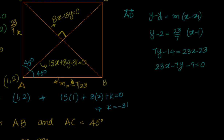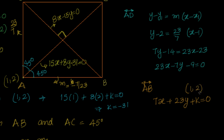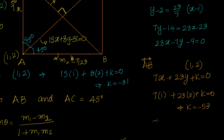Now let's find out the equation of AB. Since AB is perpendicular to AD, the equation has the form 7x plus 23y plus k equal to 0, and it must pass through (1, 2). Substituting: 7 into 1 plus 23 into 2 plus k equal to 0, so k equal to minus 53. The equation of AB is 7x plus 23y minus 53 equal to 0.